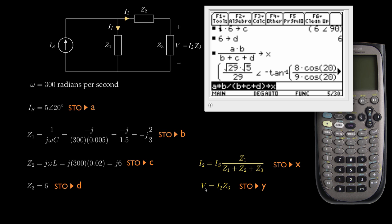Finally, I'm going to compute the output voltage V, and that'll be I2, which I just stored in X, times Z3, which has been stored in D. So that's going to be X times the variable D, and I'm going to store that in Y.